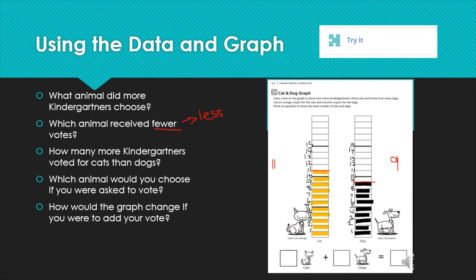And we just answered the next question. How many more kindergartners voted for cats than dogs? I can do that in a couple of ways. I can count up from 9, 10, 11 and get 2. Or I could subtract back. I could do 11 minus 9 is 2. Or I could count up from 9. 9 plus 2 equals 11. Which animal would you choose if you were asked to vote? So that's your choice. You can decide which animal you like better and add it to the graph. And then see how the graph would change when you add your vote.